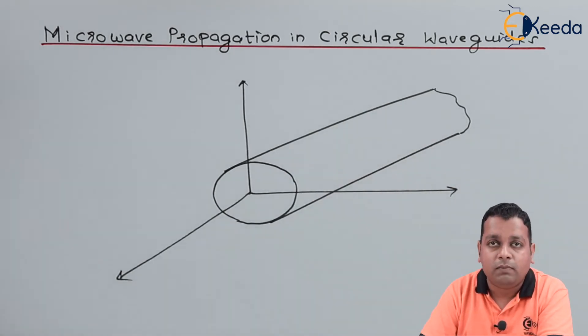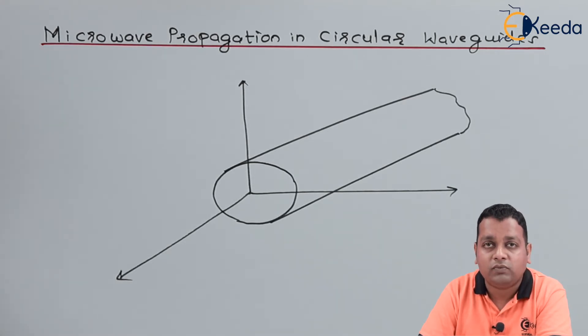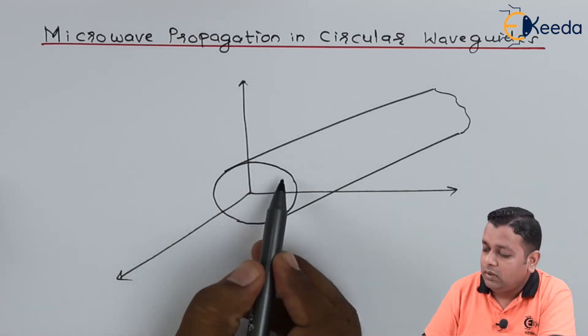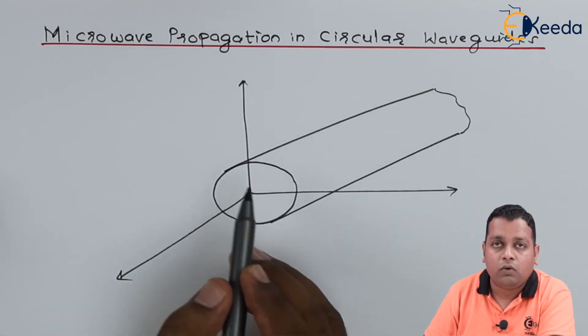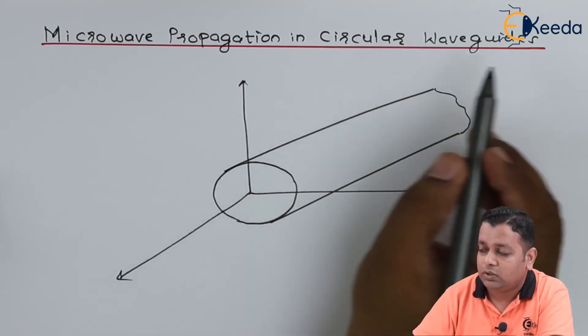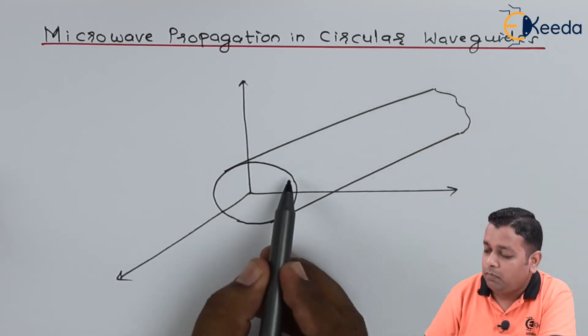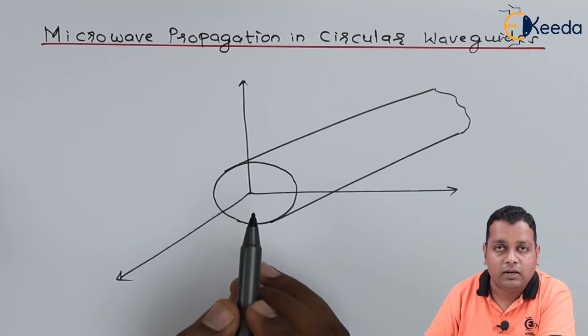Hence such a metallic tube is made up of possibly highest value of conductivity materials available. So this hollow metallic tube, now onwards we shall be calling a circular waveguide, is made up of perfect conductive walls in ideal case.